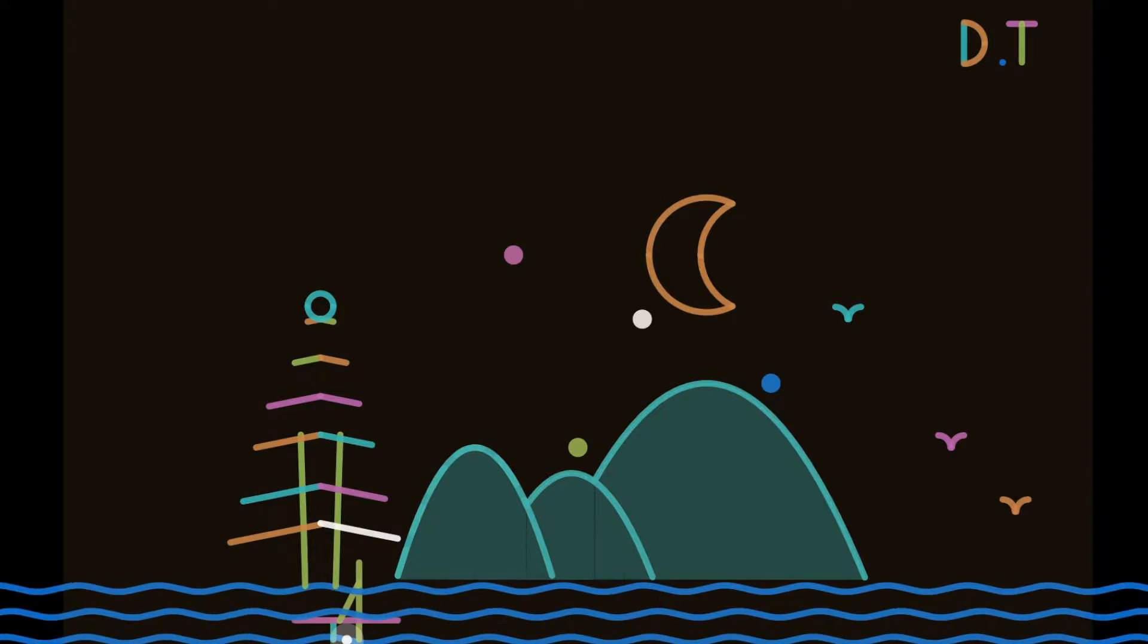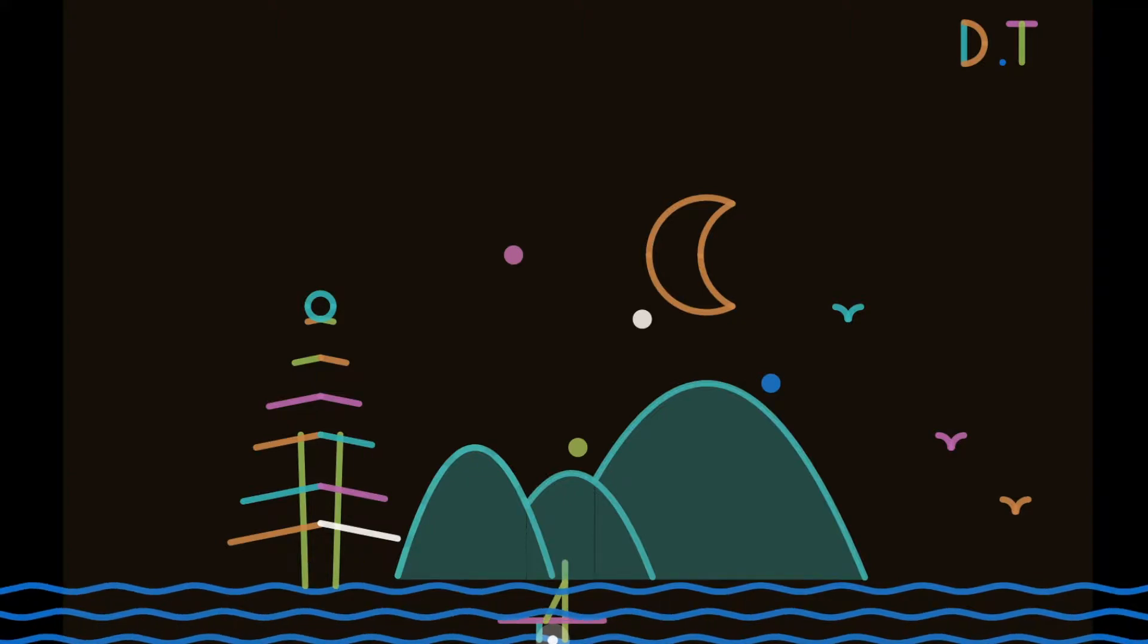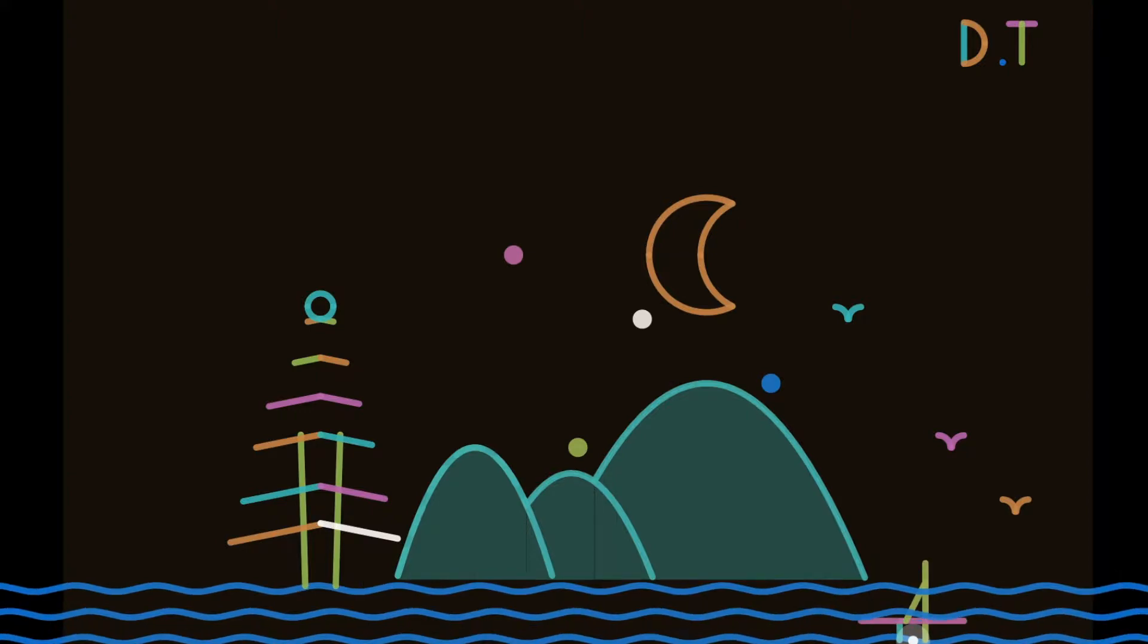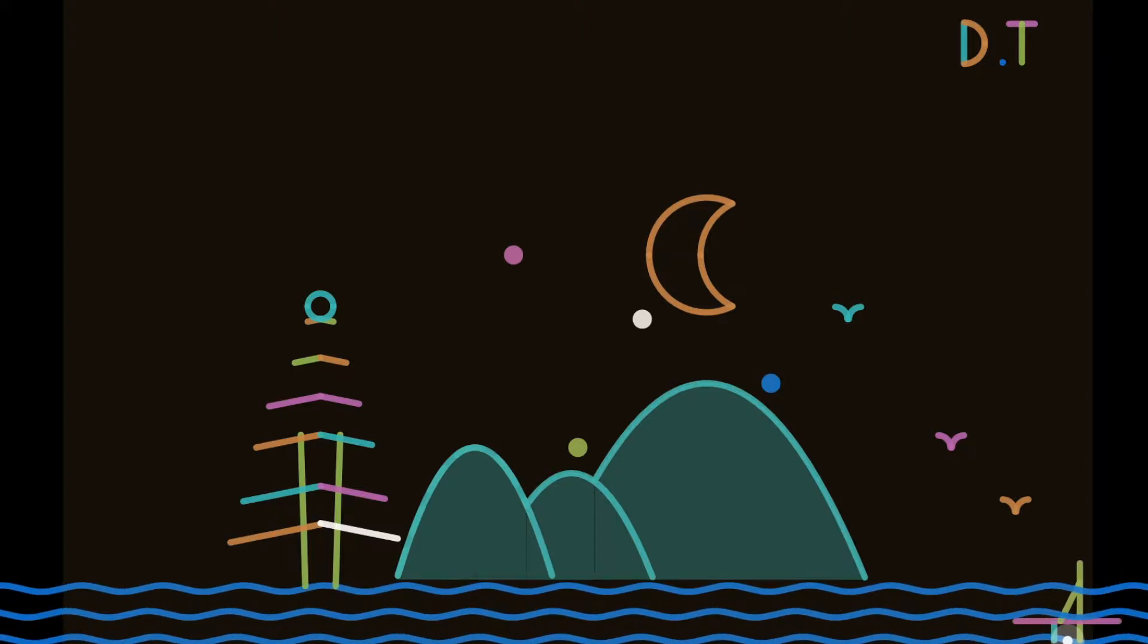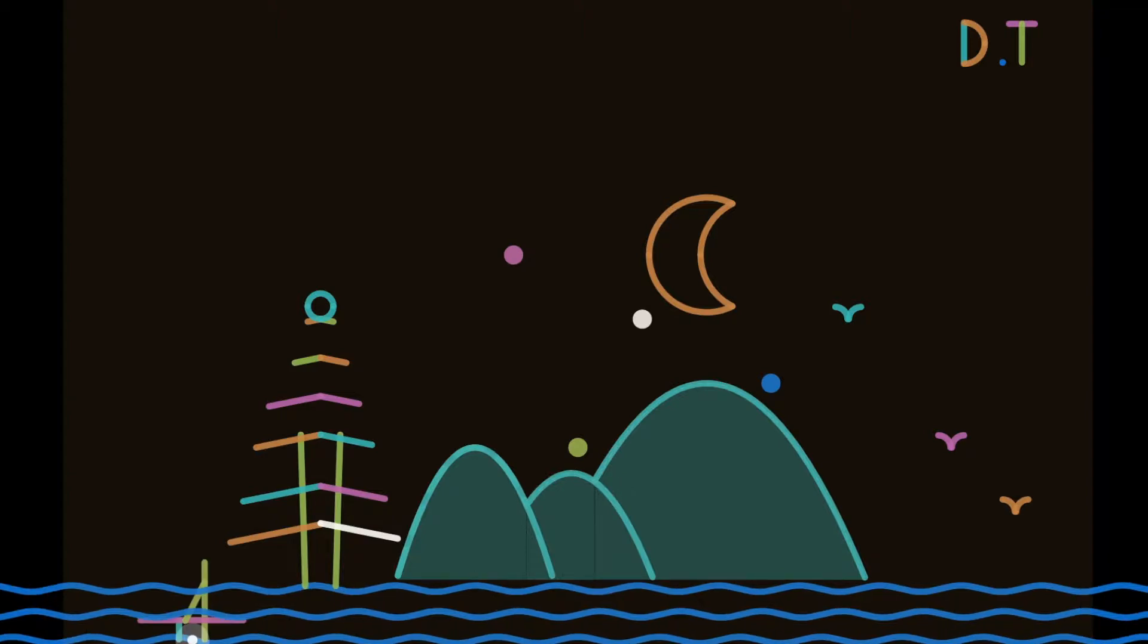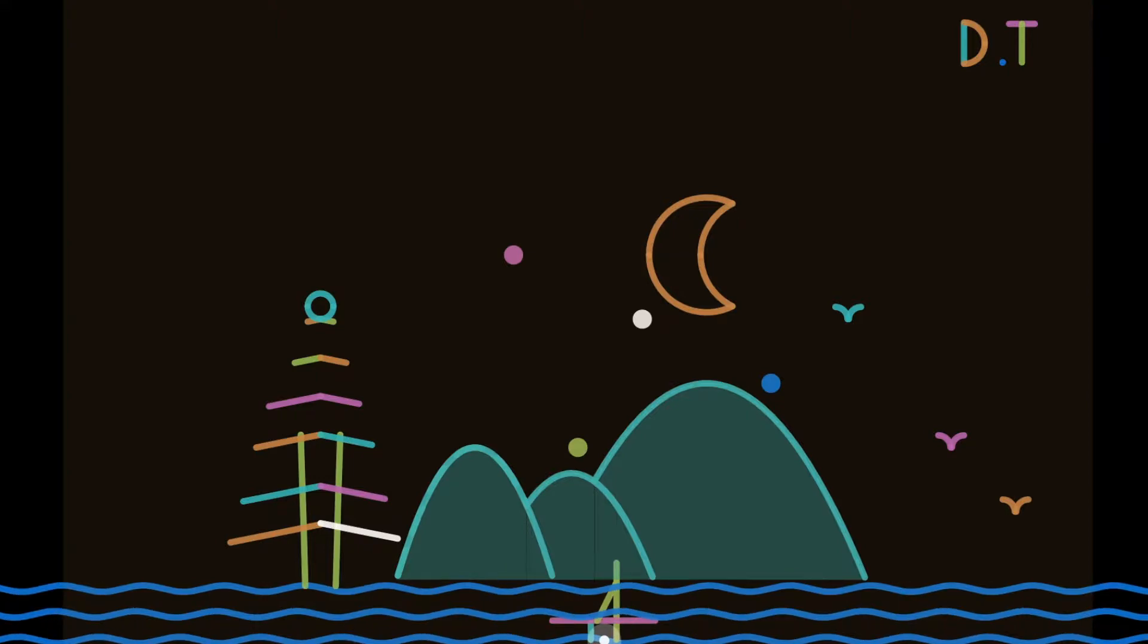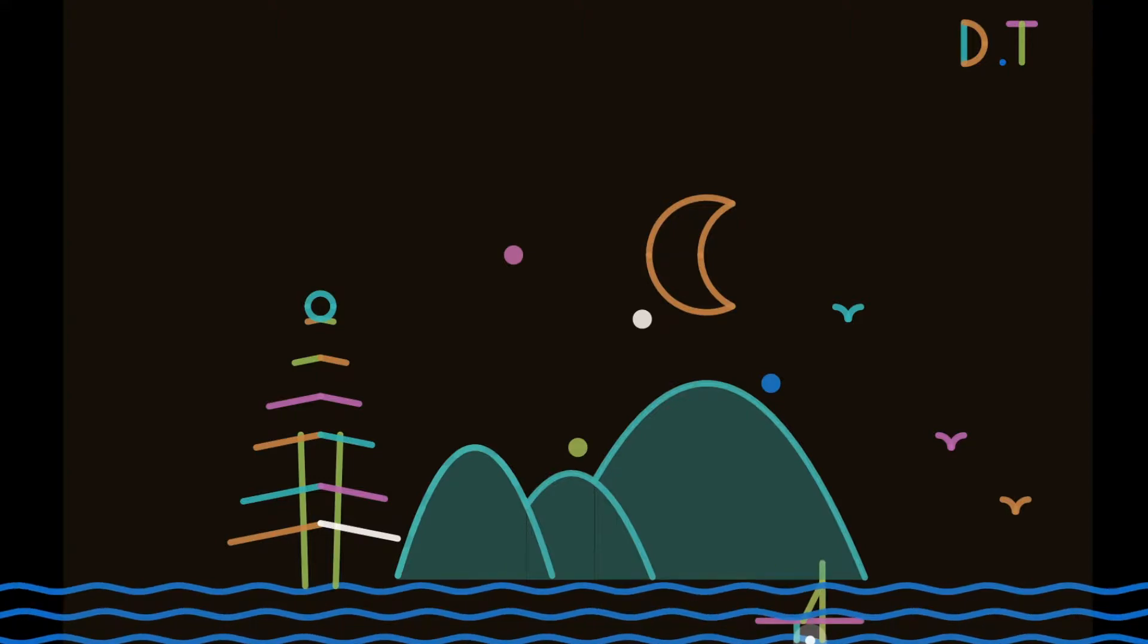You could think that I used an Adobe animation app to create this landscape, but I did it the hard way. I used an online graphing calculator called Desmos, came up with a bunch of functions to create the landscape, and used the idea of function transformations to create the animation.